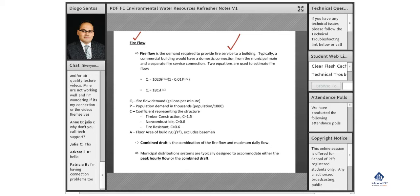This is the flow or demand required to service a building during a fire. Typically for a commercial building, you would have a domestic connection and then a separate fire connection into your building. Both would connect to the main out in the street.